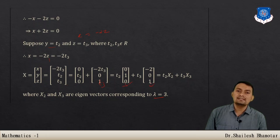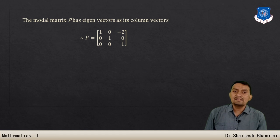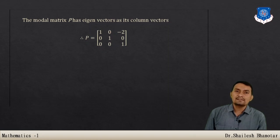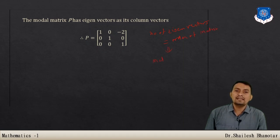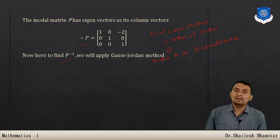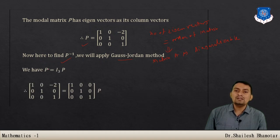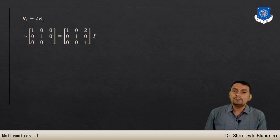Therefore, the modal matrix P has columns: first vector (1, 0, 0), second vector (0, 1, 0), and third vector (−2, 0, 1). We have three linearly independent eigenvectors equal to the order of the matrix, so A is diagonalizable. To find P inverse, apply the Gauss-Jordan method by augmenting P with the identity matrix I3 and row-reducing to get P inverse.